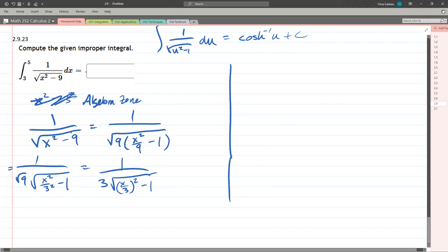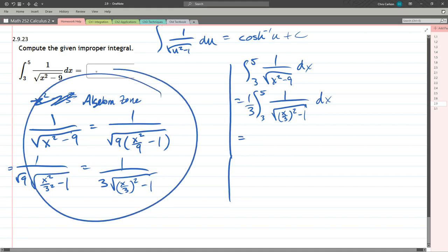So now we're ready to write our initial problem. From 3 to 5, 1 over square root x squared minus 9 dx equals integral, that 3 can, that 1 third can be written out front. So all I do is algebra here. We got all that from our algebra zone right there.